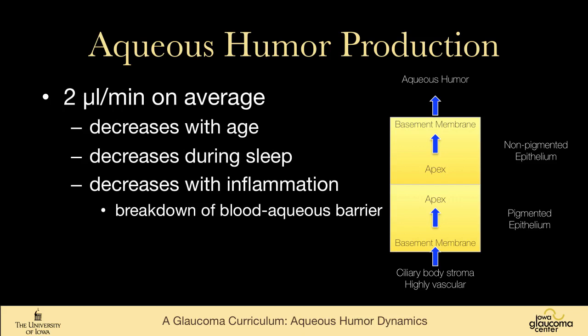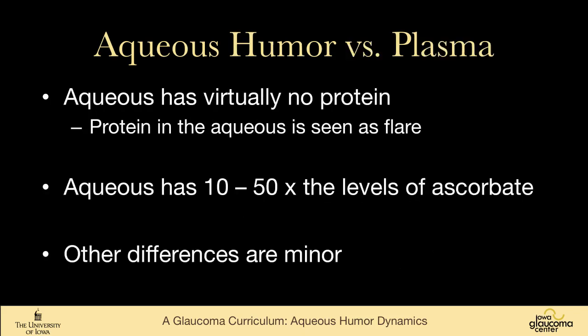On average, aqueous is produced around 2 microliters per minute. This goes down as we age and decreases as we sleep. Inflammation decreases it by breaking down the blood aqueous barrier. There are subtle differences between aqueous humor and plasma, but two main ones: aqueous has virtually no protein — that's why it's crystal clear — and if protein enters the aqueous it produces flare. Aqueous also has 10- to 50-fold the levels of ascorbate that plasma does.